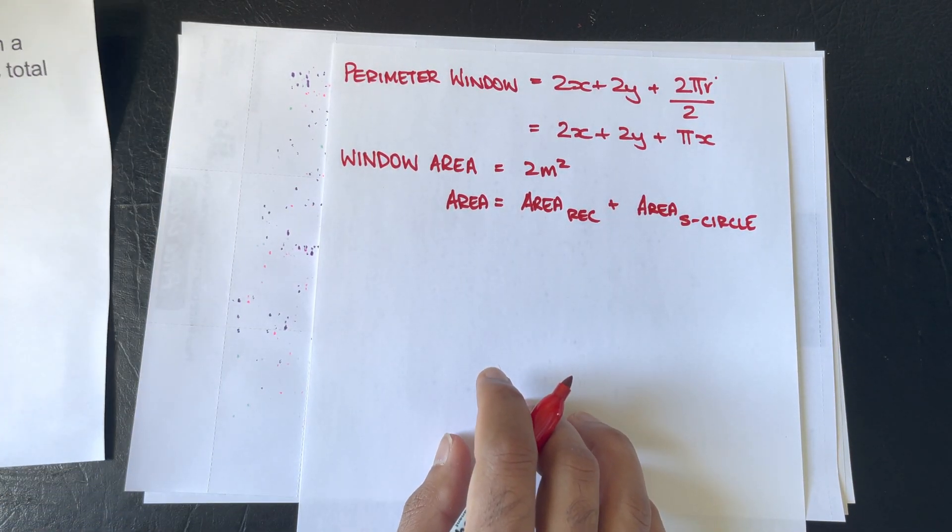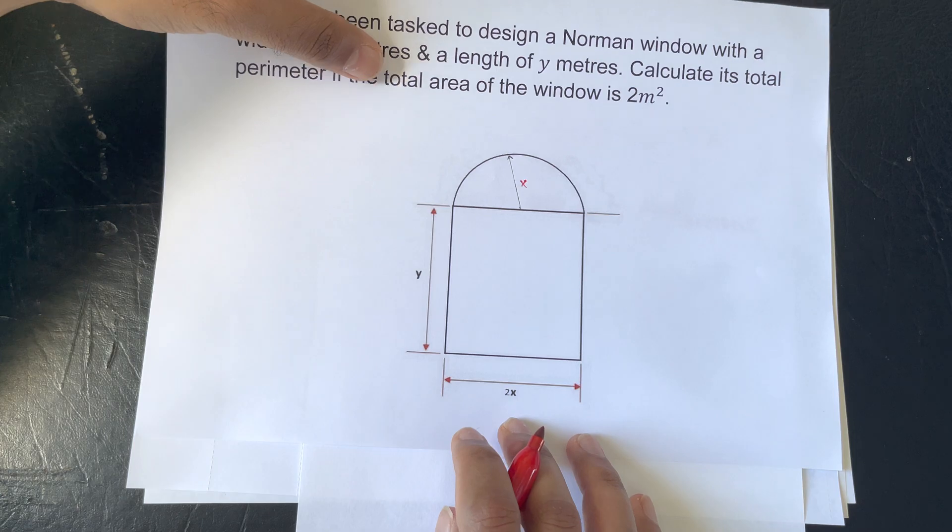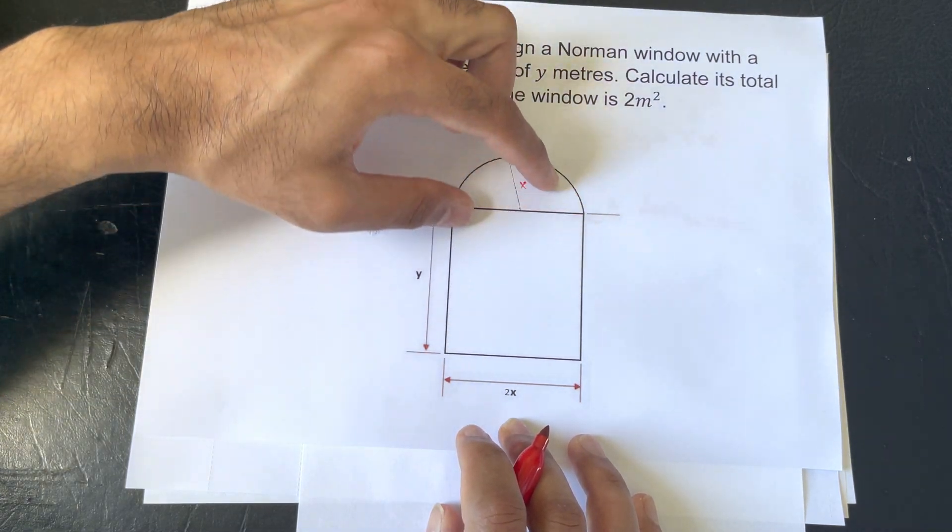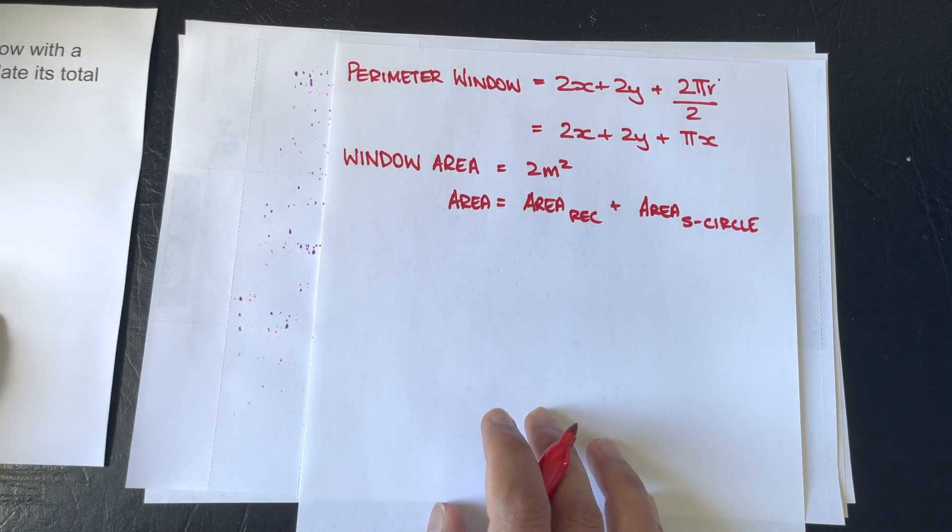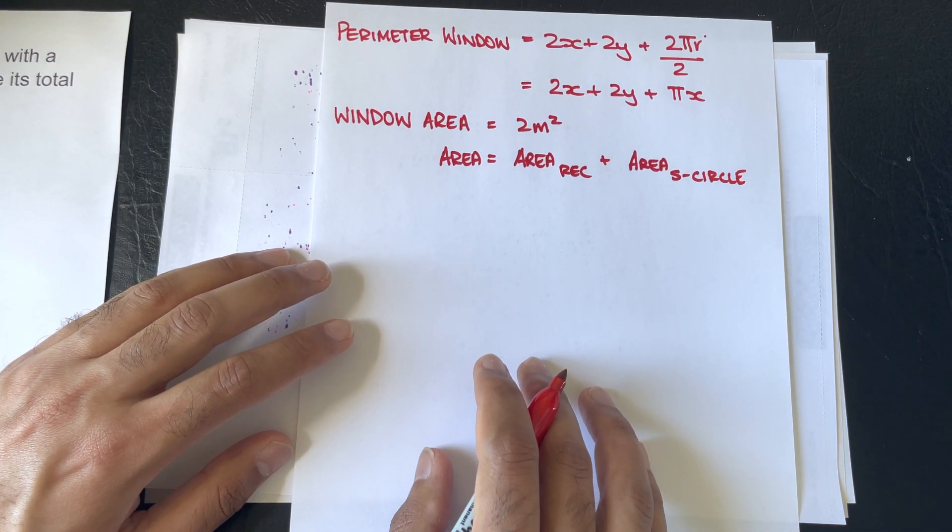Okay, and that's illustrated in our diagram. So, the 2 meters squared is spread amongst the semicircle and the rectangle adjoined. And we will get the following.